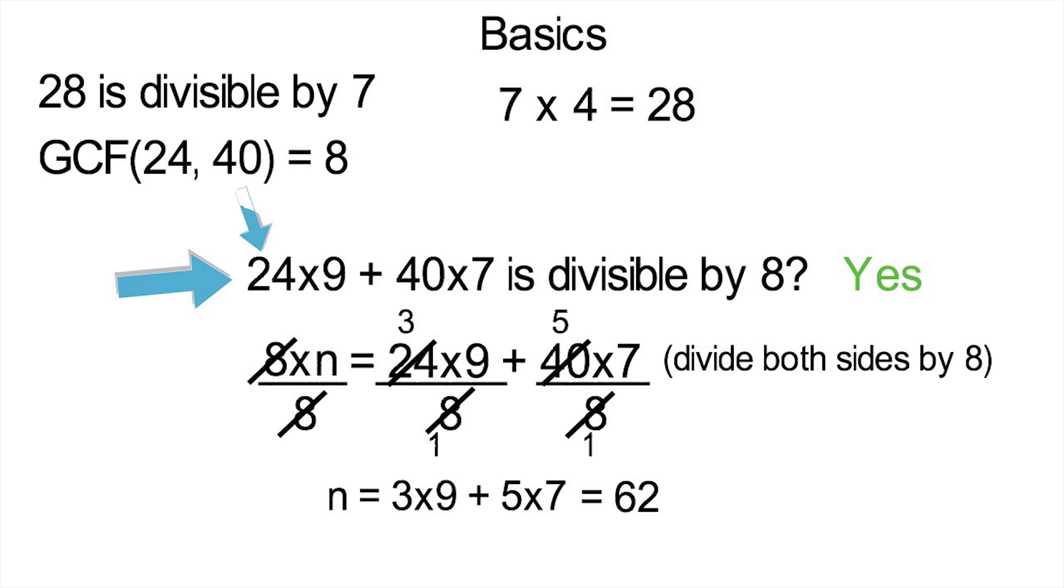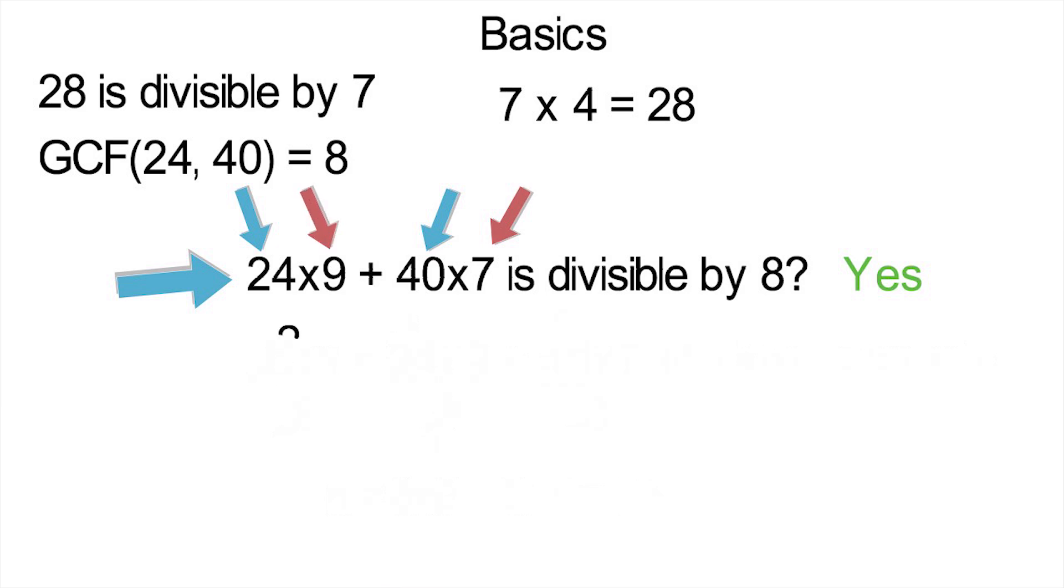Why that worked is because the 24 and 40 were both divisible by 8. It did not matter what these two numbers were. In fact, 24 times any integer plus 40 times any other integer is always divisible by 8, and now you can see why.